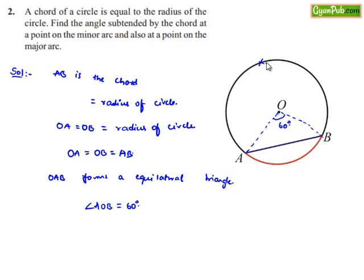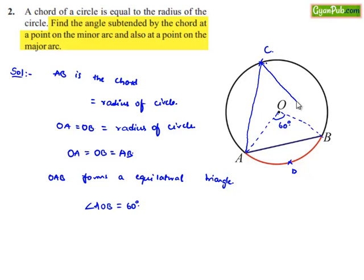Let us consider a point C on the major arc of chord AB and a point D on the minor arc of chord AB. Let us join AC, BC, AD, and BD.